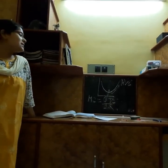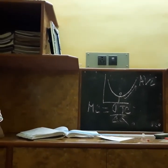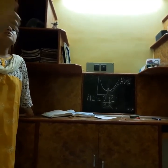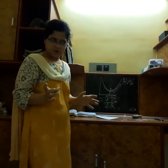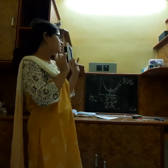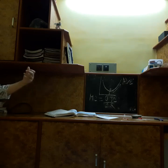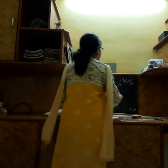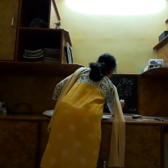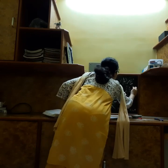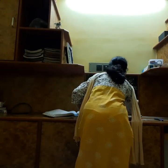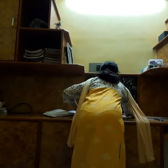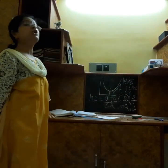Marginal cost is the change in total cost due to change in one additional unit of output produced. We are talking about the positivity of Q — output will increase. For example, suppose I am producing 5 units and my total cost is 20. When I produce 6 units, my total cost is 22. So what is my MC? Delta TC divided by delta Q = 2 divided by 1 = 2. Clear?